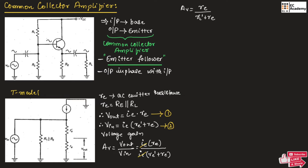Usually, Re will be very much greater compared to Re'. Therefore, we can neglect Re'. Hence, the overall gain will be equal to Av = Re / Re. Therefore, the overall gain of the common collector amplifier will be equal to 1.